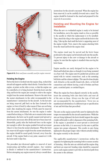The procedure just discussed applies to removal of most reciprocating and turbine aircraft engines. Any variation in details is outlined in the manufacturer's instructions. Before attempting any engine removal, always consult these instructions for the aircraft concerned. When the engine has been removed, it can be carefully lowered onto a stand, fastened to the stand, and prepared for the removal of accessories. When the new or overhauled engine is ready to be hoisted for installation, move the engine stand as close as possible to the nacelle. Attach the sling to the engine, hook the hoist to the sling, take up the slack, then remove the engine attaching bolts from the stand and hoist the engine clear.